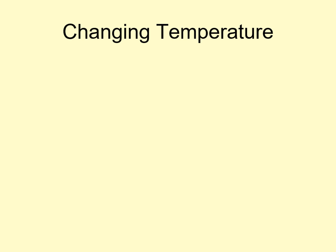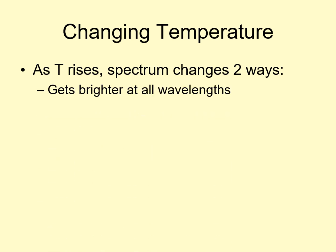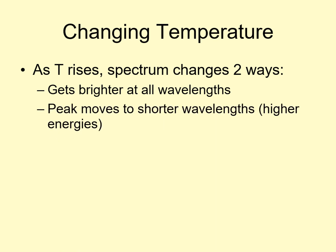What I just described for a hot piece of metal applies generally for thermal radiation. As an object heats up, the light it emits changes two ways. The brightness goes up rapidly, and the color changes toward shorter wavelengths. In other words, it gets bluer.